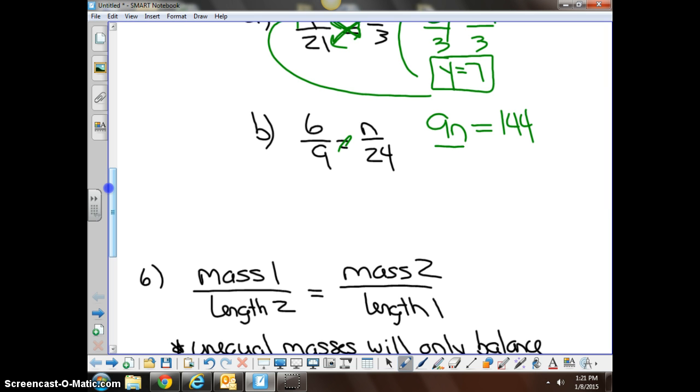Again, solve for your variable. Divide by nine, n equals, looks like 15. Box your answer. Smart people check. Smart people probably check in the original problem. And 6 ninths and 15 twenty-fourths, both reduced down to two-thirds. Or you could use cross products to check your work to make sure you have it correct.